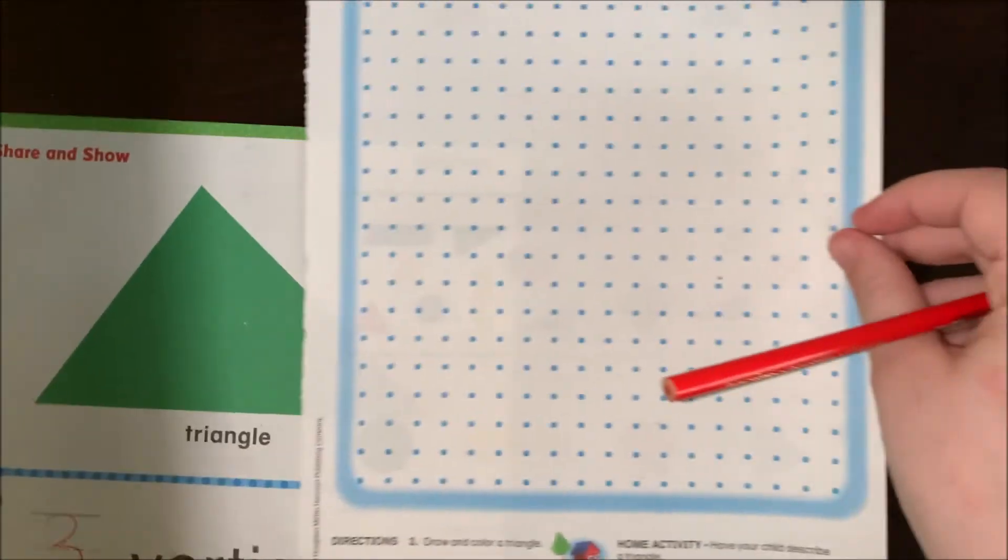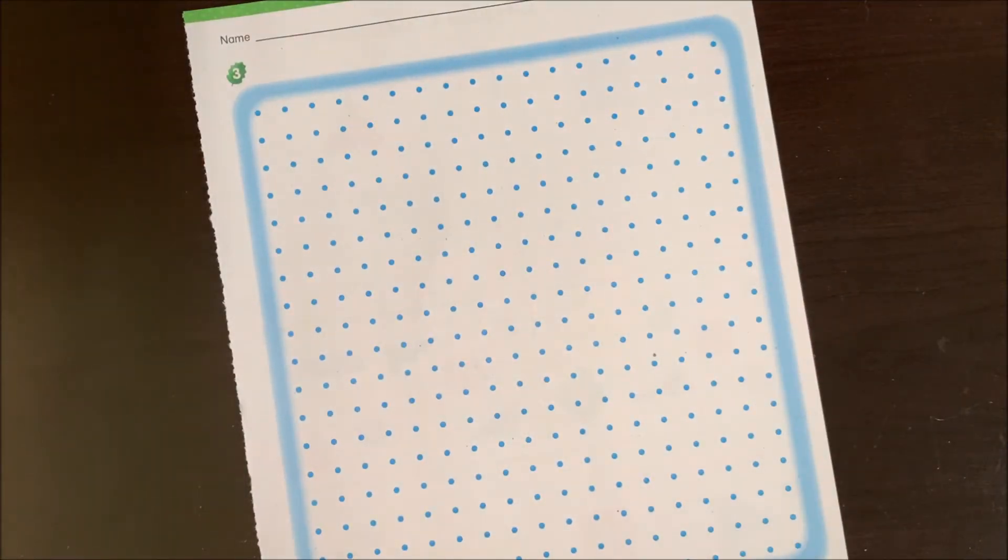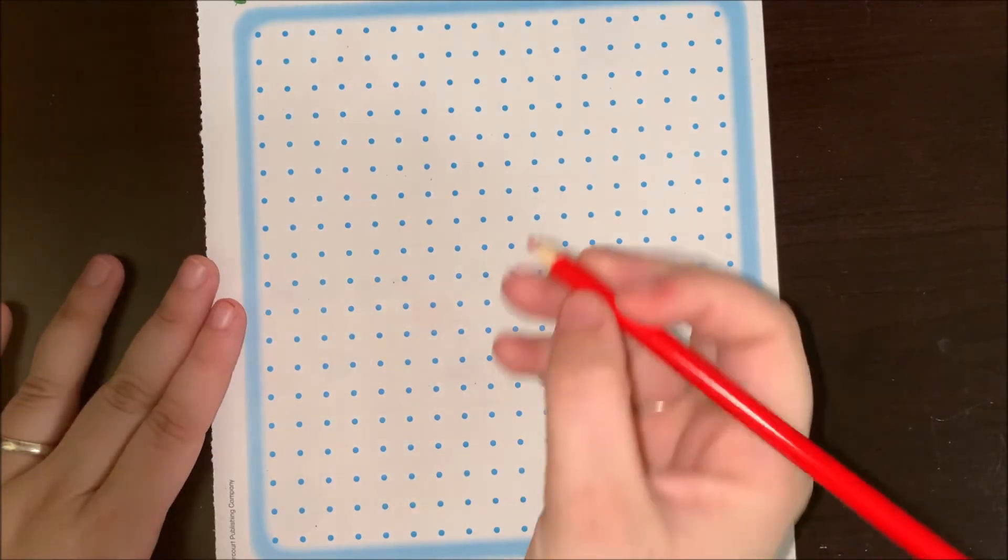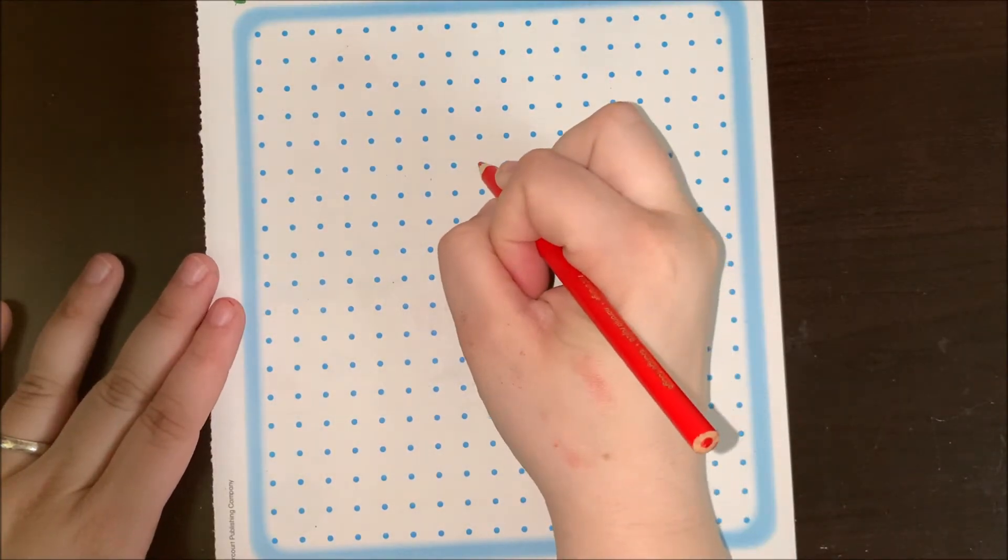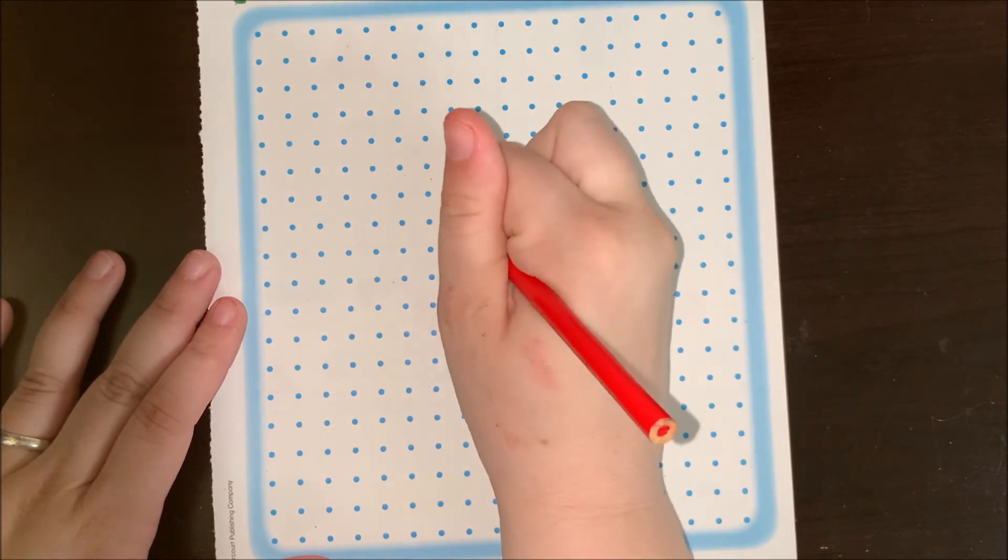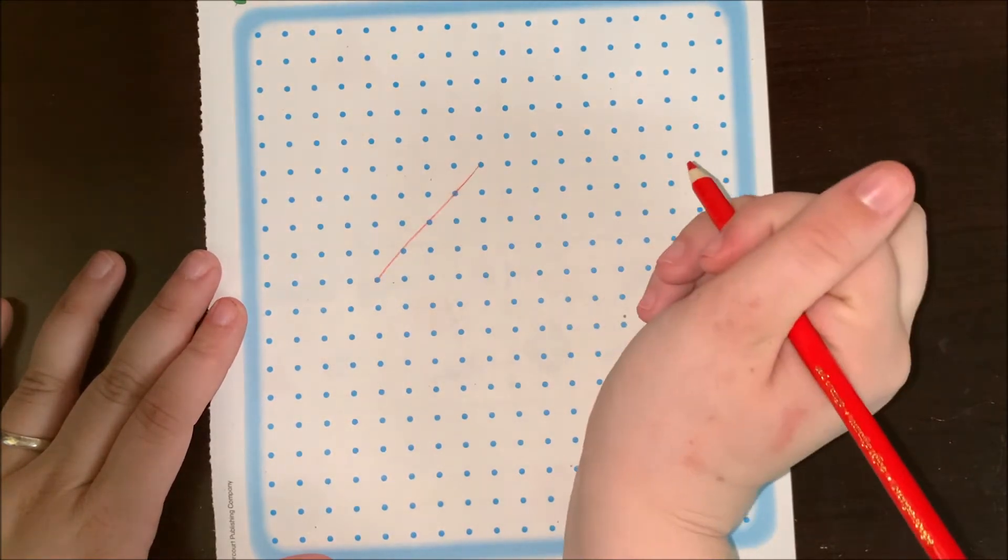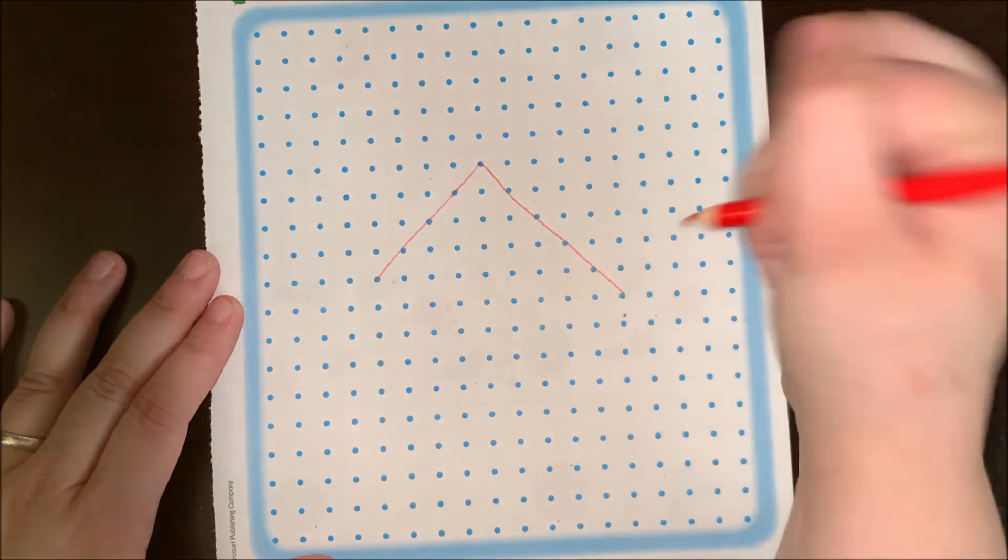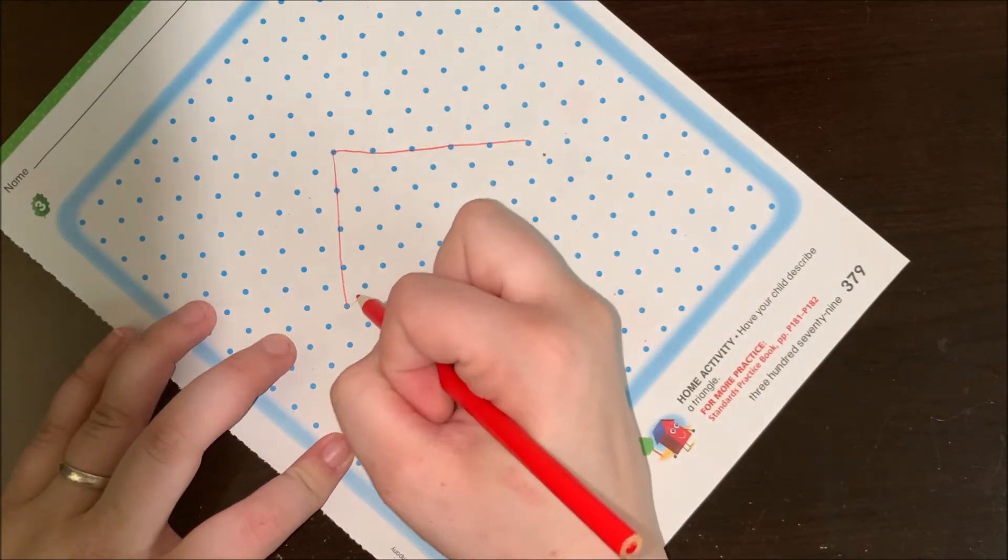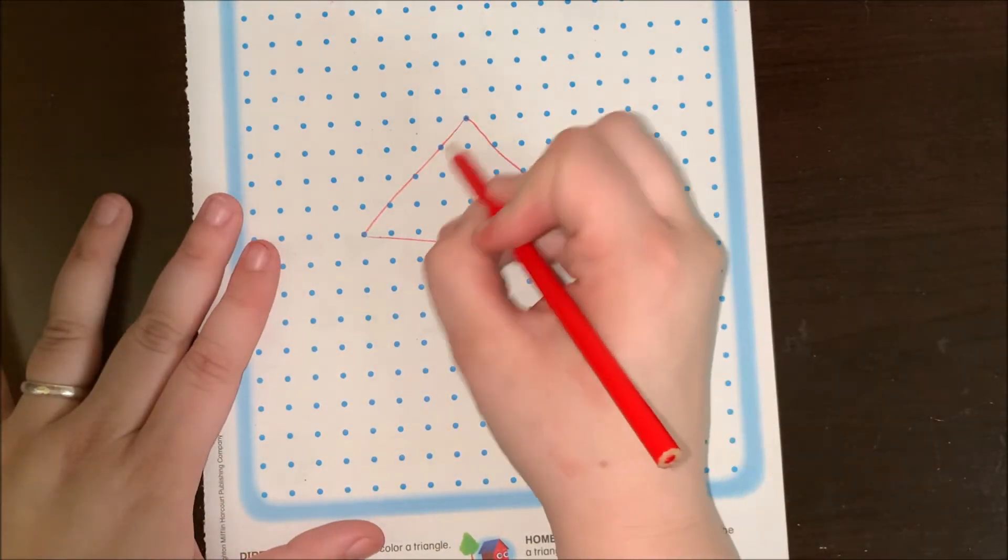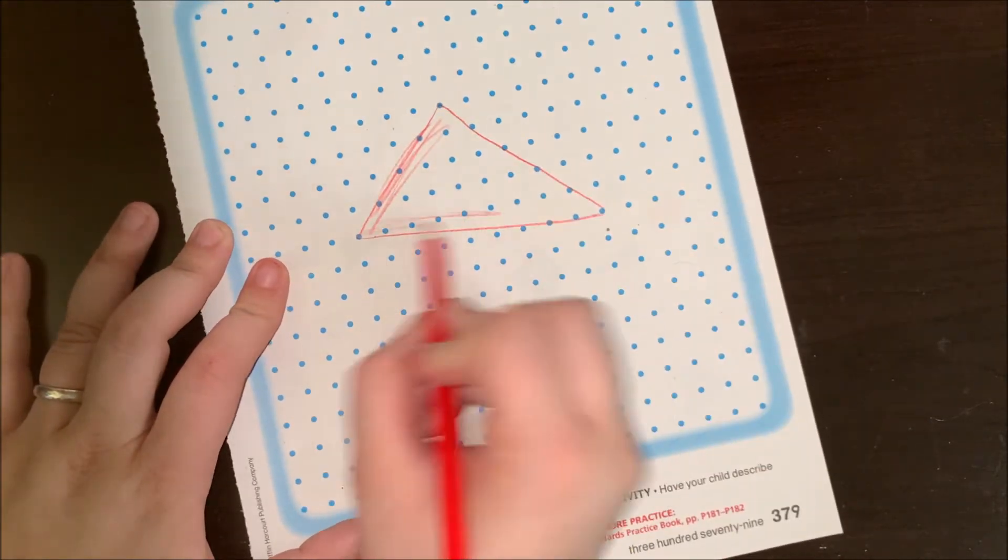Alright, you can turn onto this page. You are going to draw and color a triangle. The best advice I can give you is just to choose a dot to start with and do diagonally to the other dots. Triangles are not like squares where they don't have to be all the same size, the sides. They can be any size you would like.